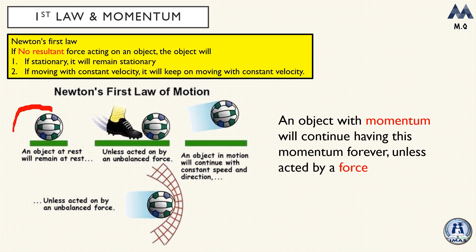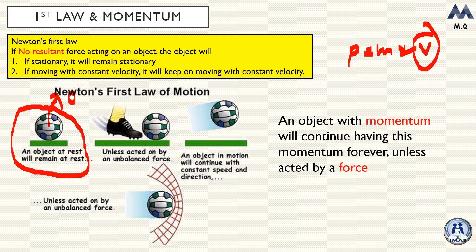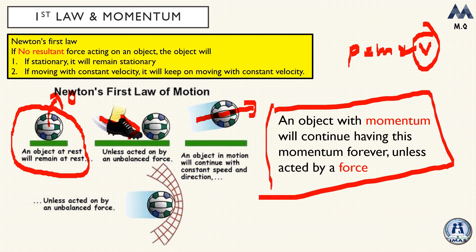To demonstrate: if an object is at rest it will remain at rest — it has inertia and does not want to change its momentum, which in this case is zero (momentum equals mass times velocity, and velocity is zero). The object wants to keep its momentum unless a force is applied, such as a kick. When the force is applied, the ball gains a new momentum and wants to keep that momentum forever unless acted on by another force.